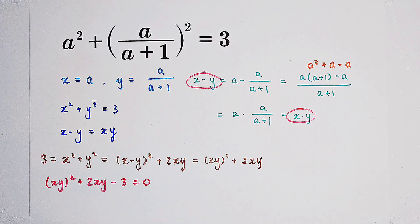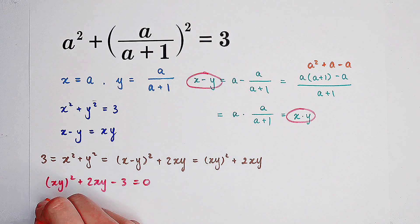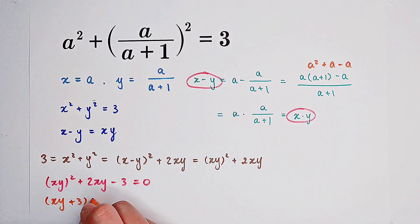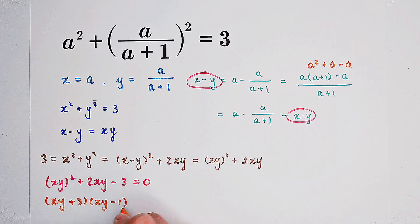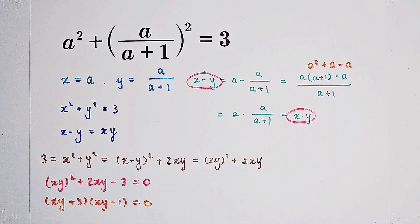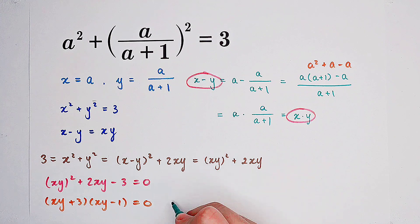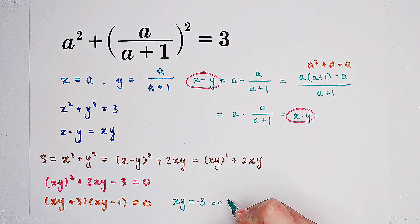And the left hand side can be factorized very easily. It is xy plus 3 times xy minus 1 equals 0. So we get two solutions. The first one is x times y equals negative 3, or x times y equals 1.